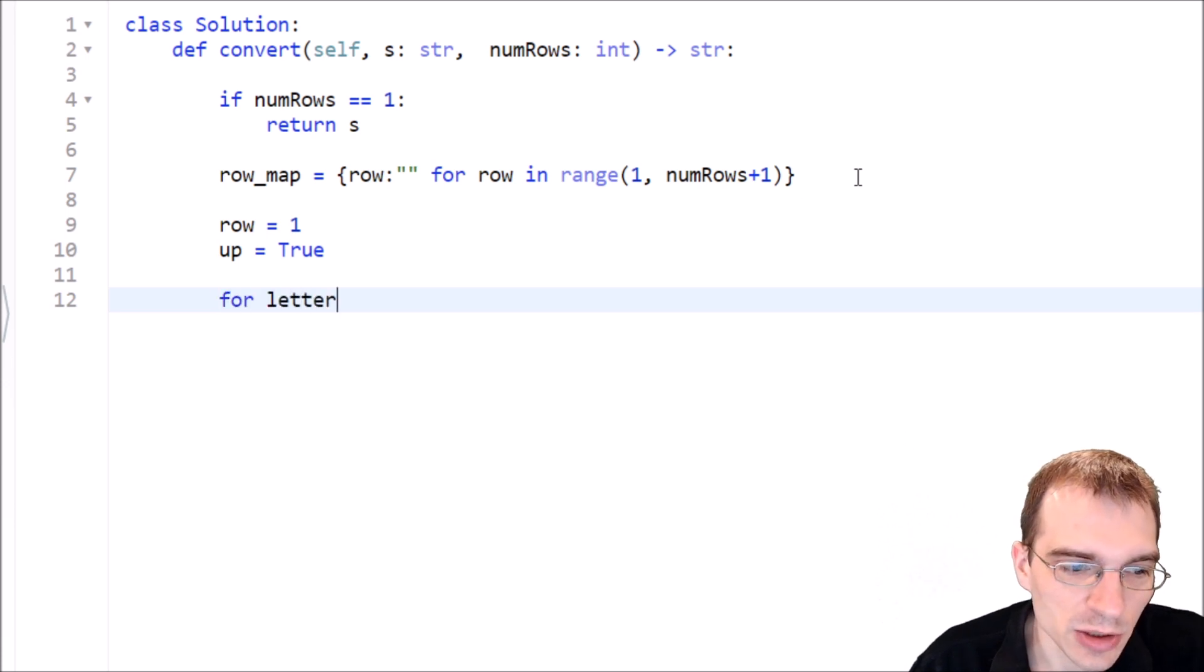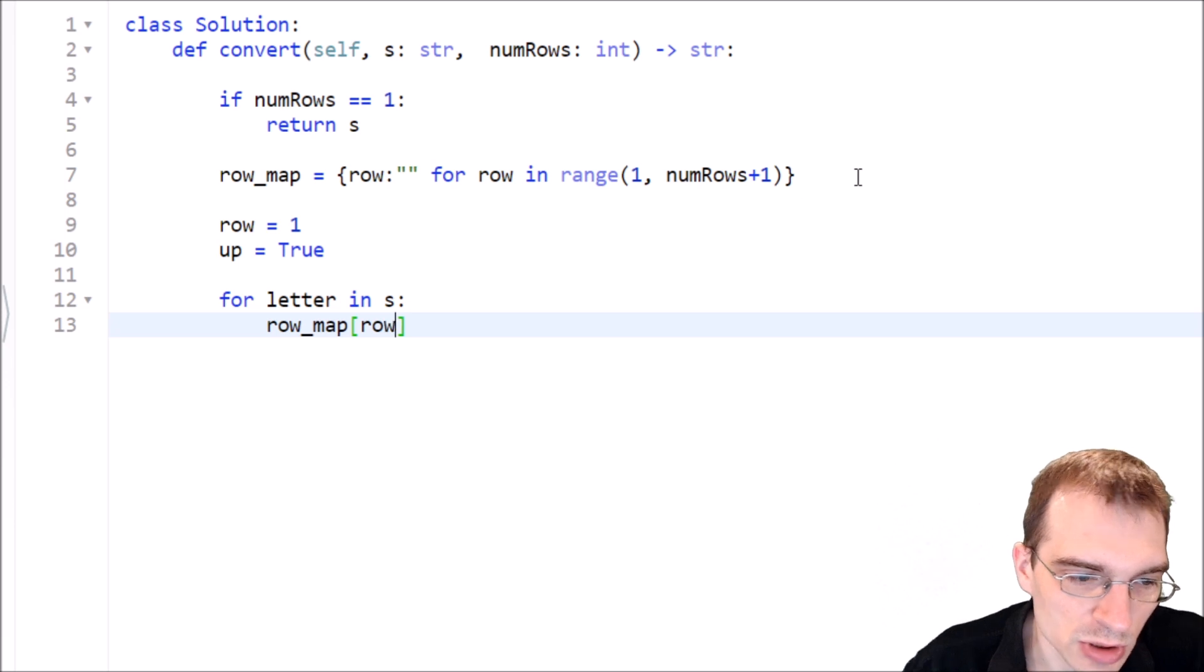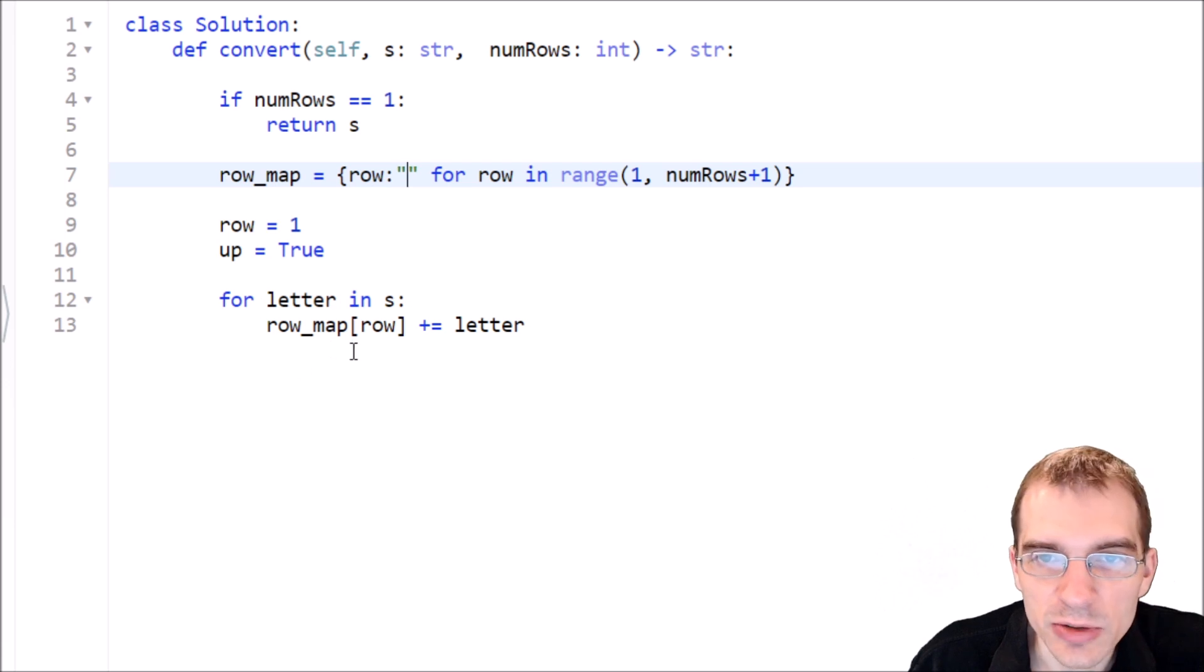For letter in s, we're going to add to our row map the current row, so it starts with row one, plus equals our letter. Basically, on the first iteration, we're at row one, so we're breaking off the first letter and storing that in row one in the row map. Then for the next iteration of the loop, maybe we're storing something in row two, row three, row four, eventually we'll go back and start storing things in reverse order.